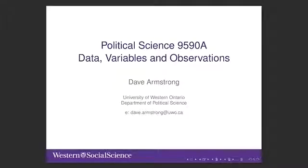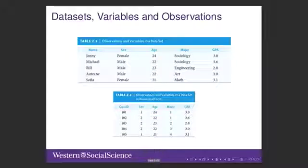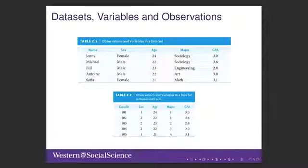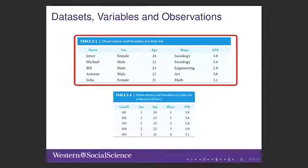Today I want to talk a bit about what data look like. A dataset is a collection of information on attributes or variables for different units which we call observations. As you can see in table 2.1, the units in this dataset are people. The dataset records several attributes for each individual.